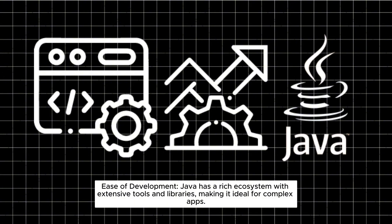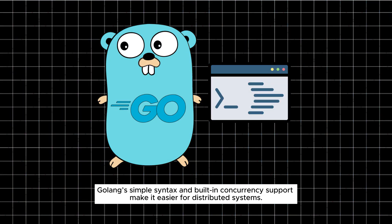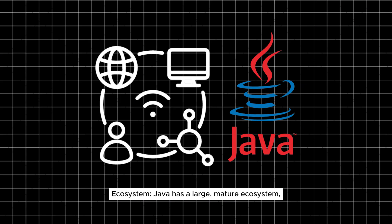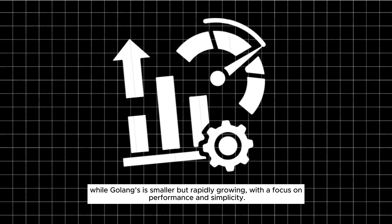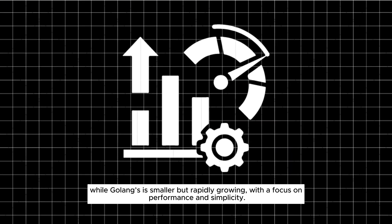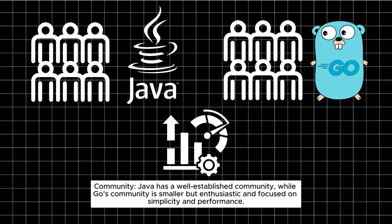Ease of development: Java has a rich ecosystem with extensive tools and libraries, making it ideal for complex apps. Go's simple syntax and built-in concurrency support make it easier for distributed systems. Ecosystem: Java has a large, mature ecosystem, while Go's is smaller but rapidly growing with a focus on performance and simplicity. Community: Java has a well-established community, while Go's community is smaller but enthusiastic, focused on simplicity and performance.